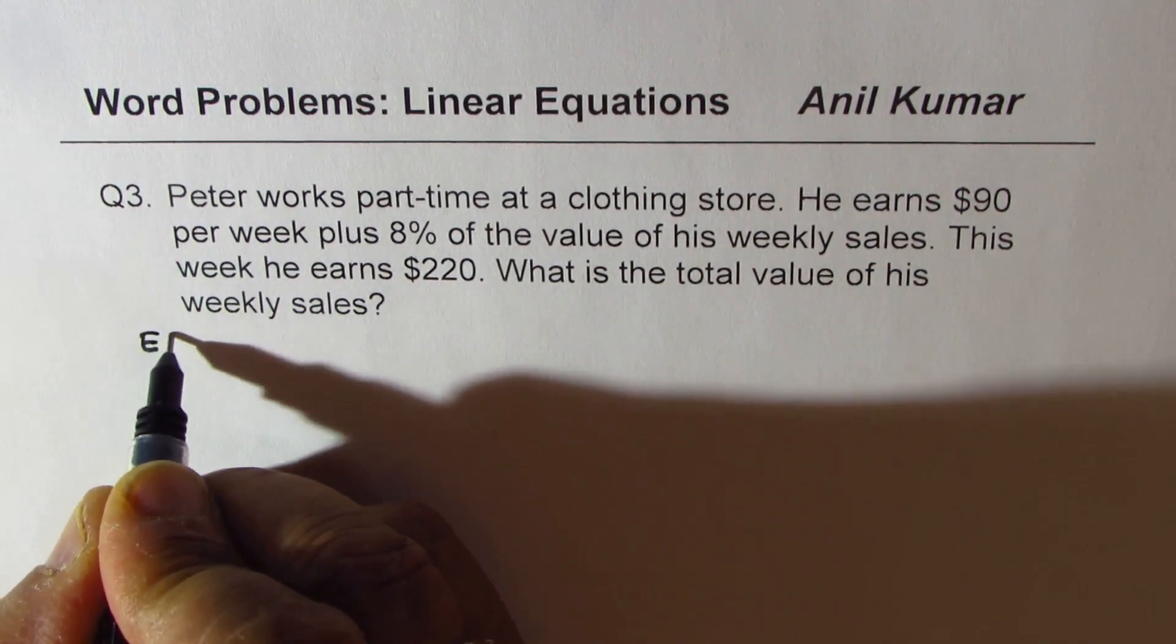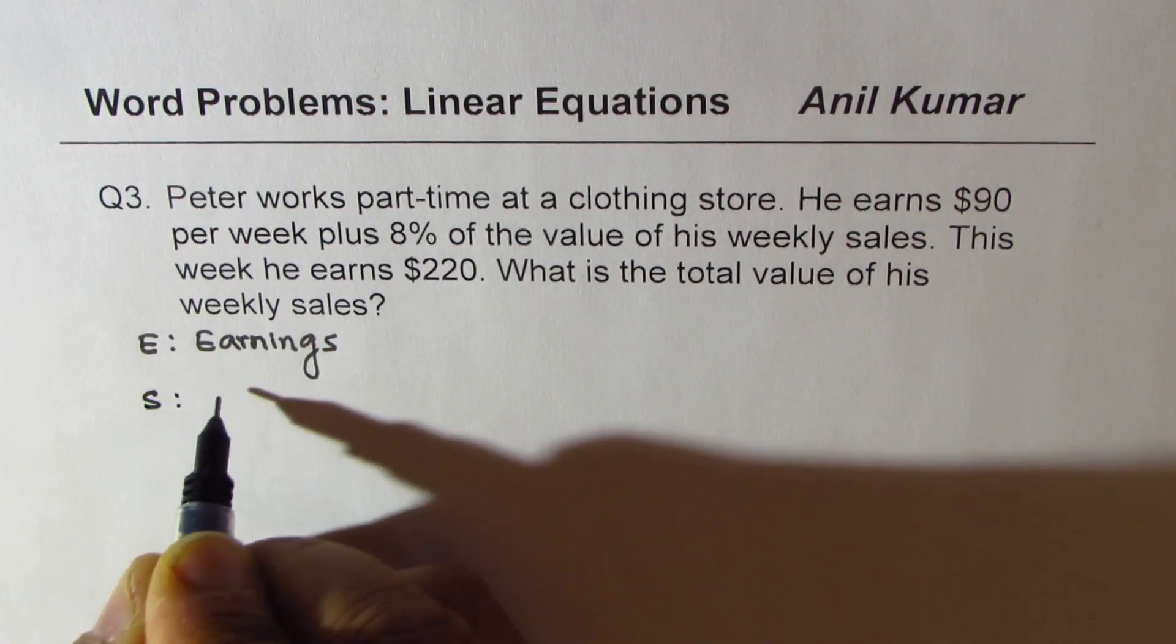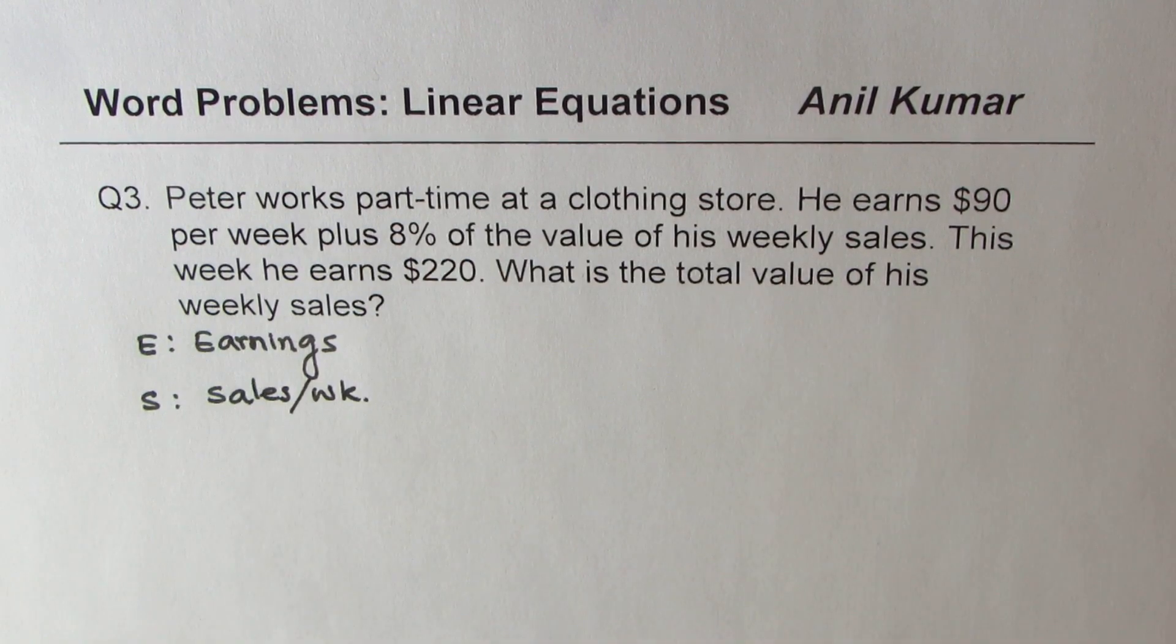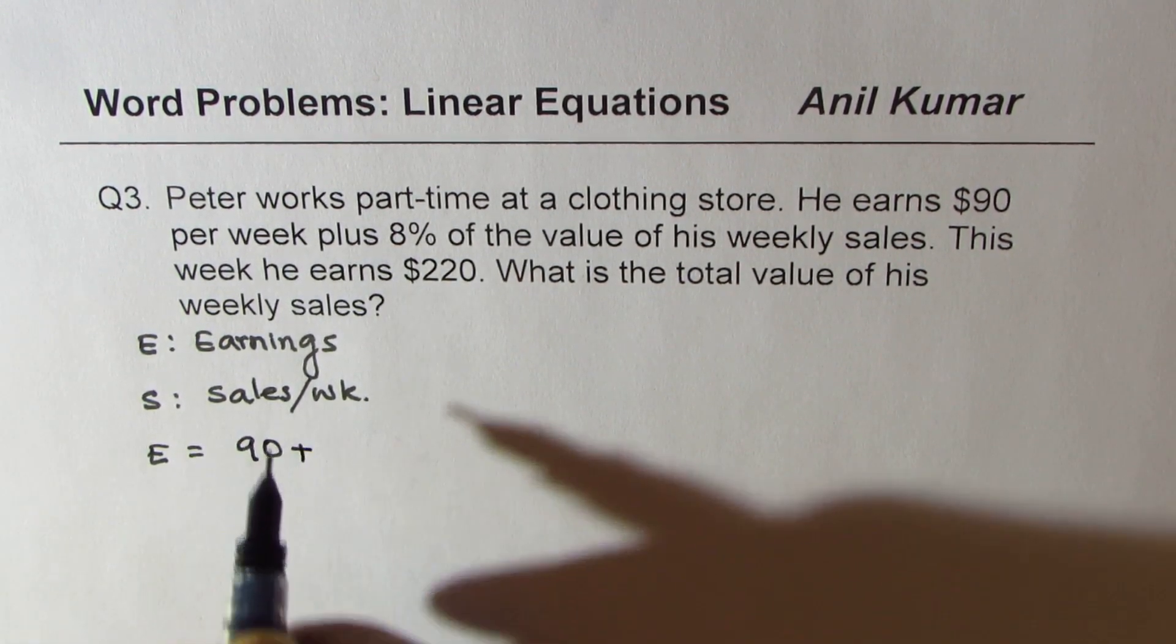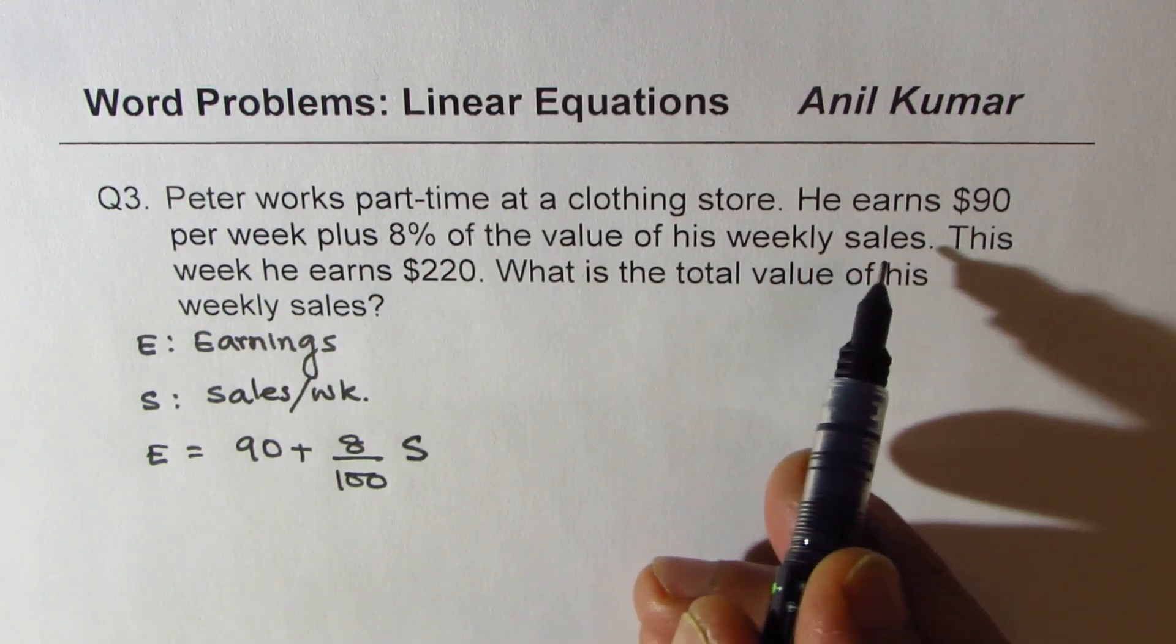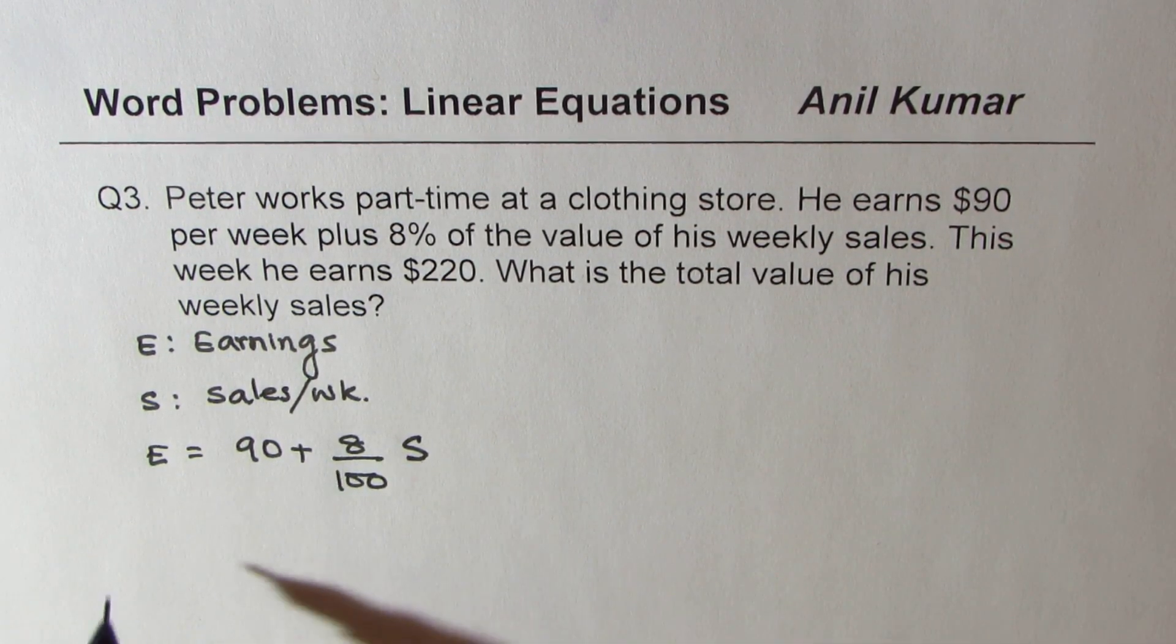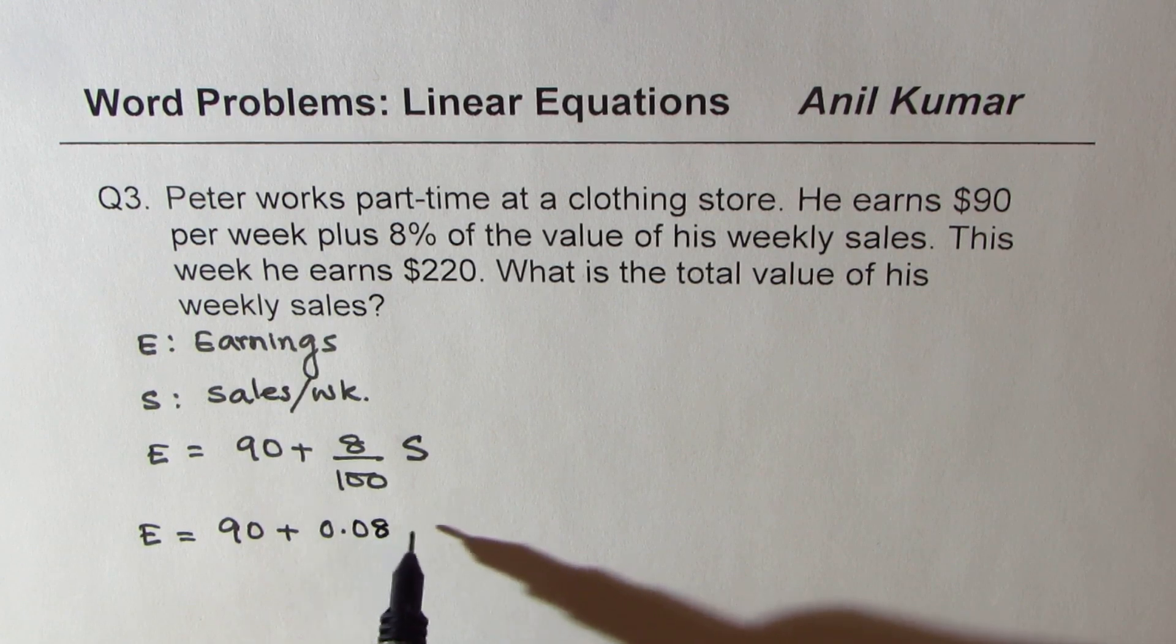So we'll say E is earnings and S is sales per week. Peter works part time in a clothing store. He earns $90 per week plus 8%, so earnings is 90 plus 8% means 8 out of 100 value of his weekly sales, which is S. So 8% of weekly sales, 8% is 8 divided by 100. Or directly you could have written E equals 90 plus 0.08S.